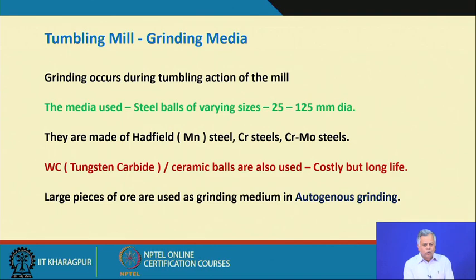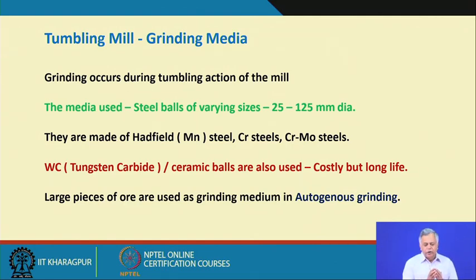Why do we need grinding media? When the mill rotates, the grinding media falls, and because they are larger and have higher density and hardness than the material to be ground, when they fall on the particles the impact causes breakage. Even when the entire charge is being rotated, there is abrasion between the ball surfaces and the liner surfaces, and between particles there is a shearing action. So we have impact, shearing, and many other mechanisms through which grinding occurs.